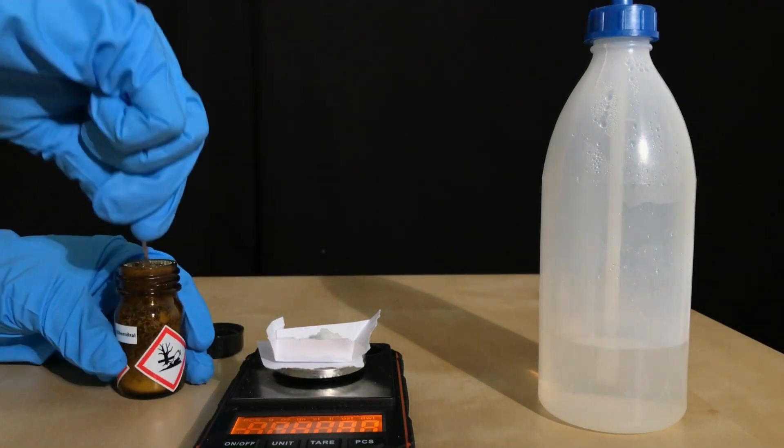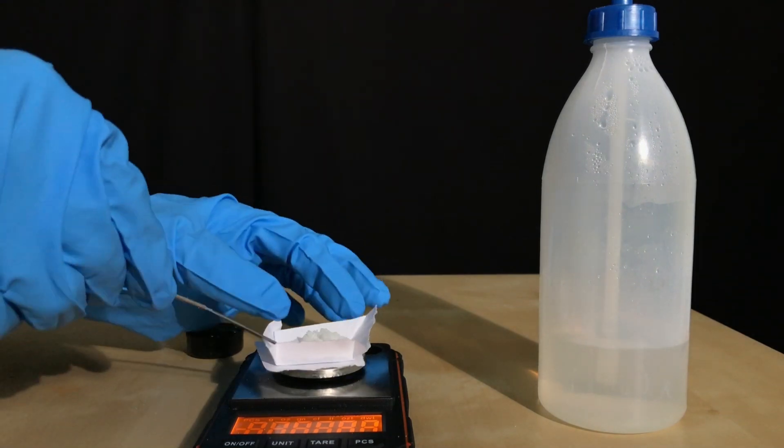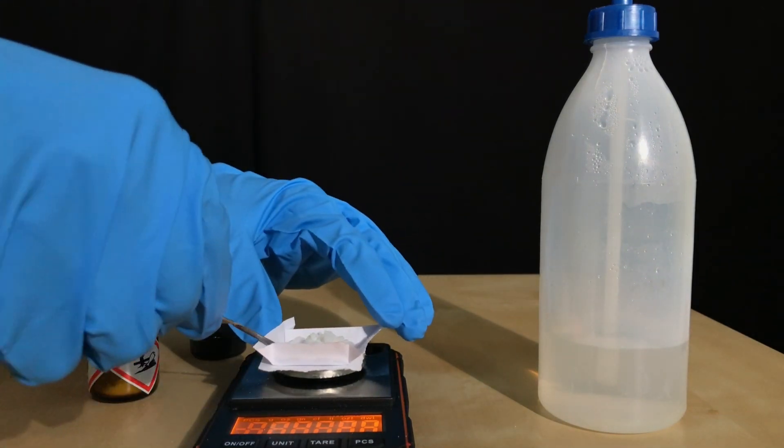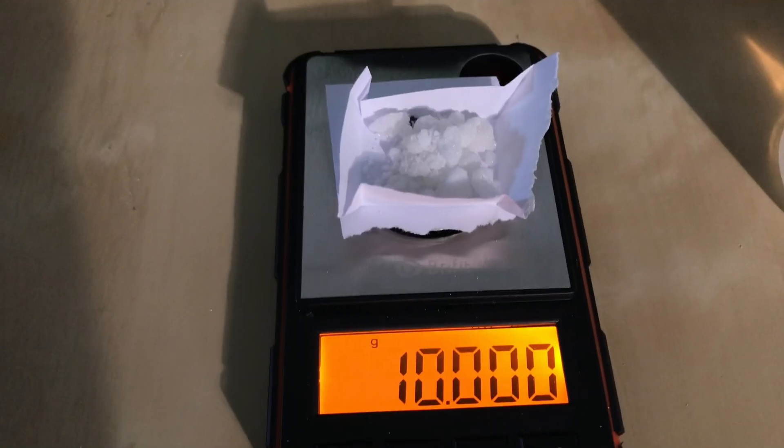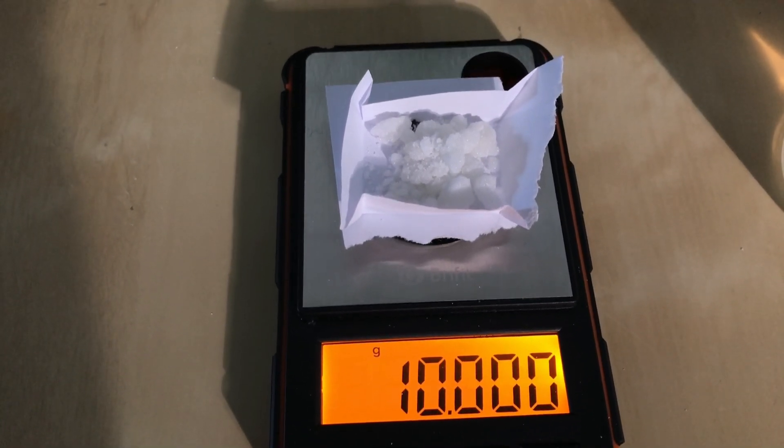To weigh out the reagents, I'm using a very accurate scale because I don't want to waste more silver nitrate than I actually intend to. We weighed out exactly 10 grams of silver nitrate. As you can see, silver nitrate is this beautiful white crystalline solid.